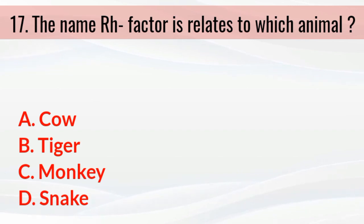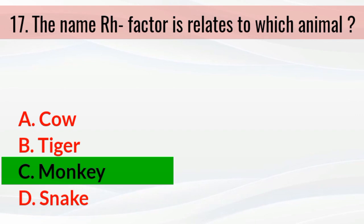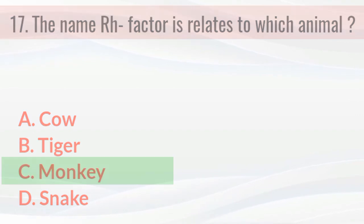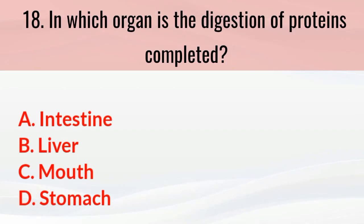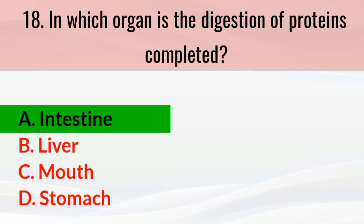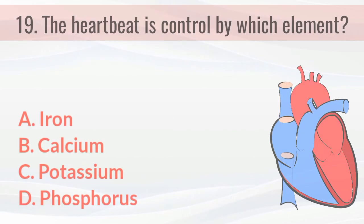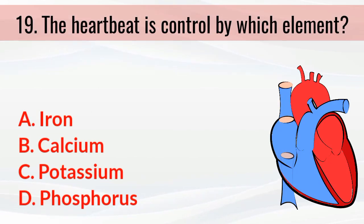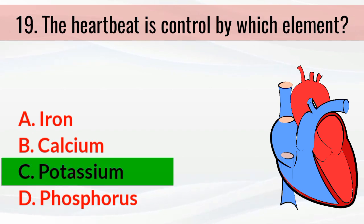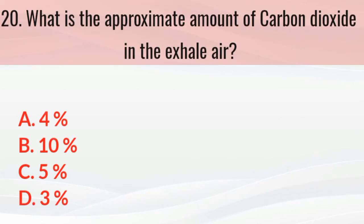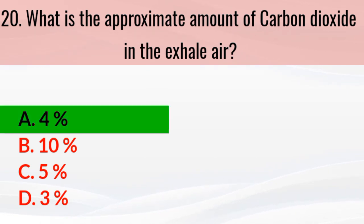The name of the Rh factor is related to which animal? The answer is the monkey. In which organ is the digestion of proteins completed? The answer is the intestine. The heartbeat is controlled by which element? The answer is potassium. What is the approximate amount of carbon dioxide in exhaled air? The answer is four percent.